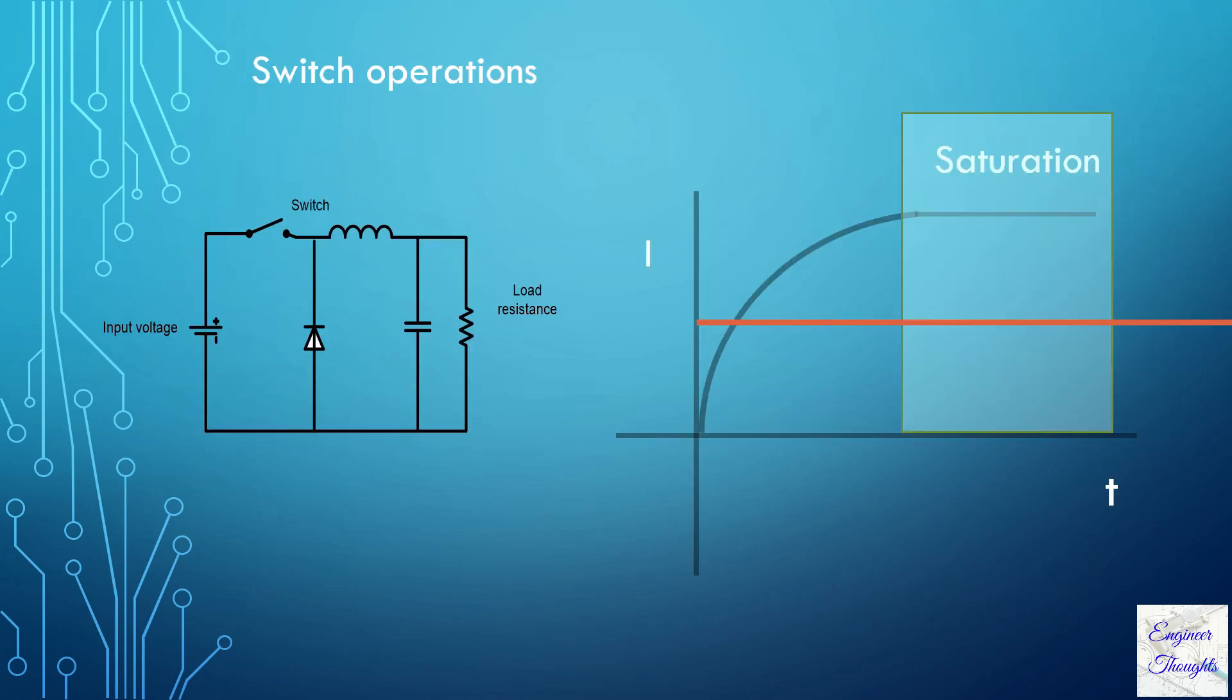Thus, we consider in any converter that inductor current does not go to the saturation region. Let us say during the turn-on of the switch at steady state, inductor current rises to the peak, and during the turn-off it comes to the start point.